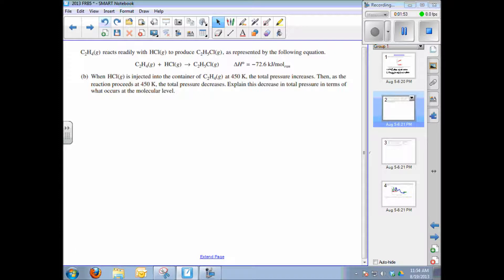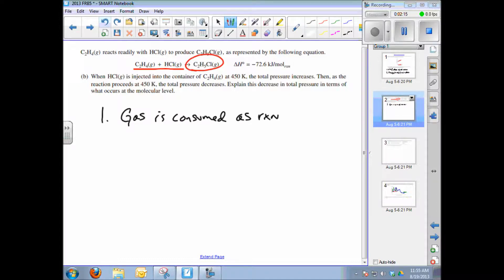The answer should be fairly obvious. On the left as reactants, you have two moles of gas particles, and on the right, you only have one mole of gas particle. So the explanation is twofold. First, gas is consumed as the reaction proceeds. And as gas is consumed, there will be fewer collisions with the walls of the container. And if there's fewer collisions with the walls of the container, the pressure goes down.